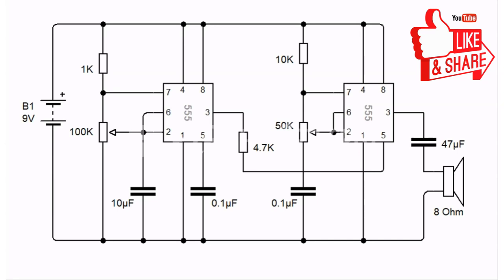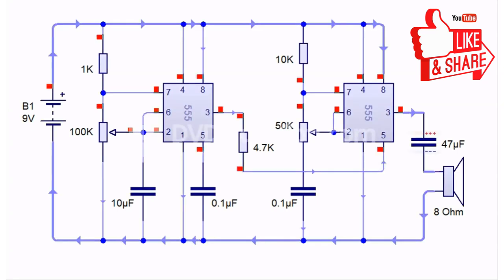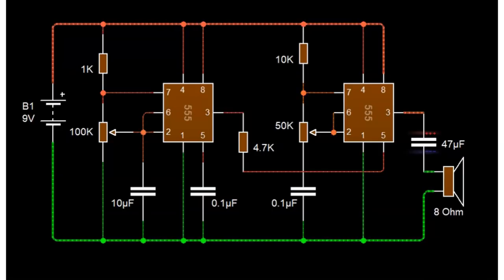Pin 3 of IC1 is connected to pin 5 of IC2 through a 4.7 kilohm resistor. At pin 3 of IC2, a speaker is connected through a 47 microfarad capacitor, which is the final output of the circuit.